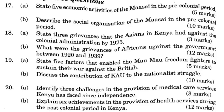Seven, the issue of female circumcision was yet another cause of discontent — circumcised girls were expelled from mission schools, leading to the establishment of independent schools. Eight, Africans were opposed to colonial status and preferred to be under a protectorate. Nine, Africans wanted to be allowed to vote for African representatives in the Legislative Council.